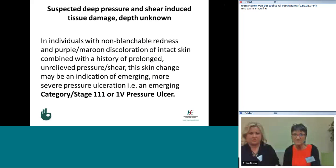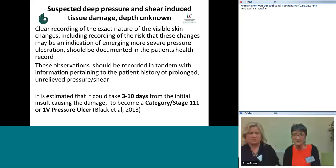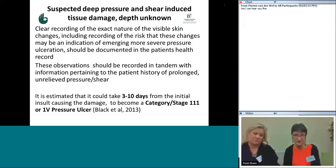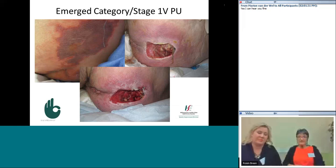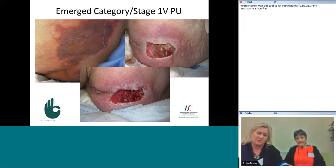Clear recording of the exact nature of the visible skin changes — including the risk that these changes may indicate emerging, more severe pressure ulceration — should be documented in the patient's health record. These observations should be recorded in tandem with information pertaining to the patient's history of prolonged, unrelieved pressure and shear. It is estimated that it could take three to ten days from the initial insult for damage to become a stage three or four pressure ulcer. This is an example of how suspected deep tissue pressure and shear-induced skin damage can evolve into a stage four pressure ulcer.